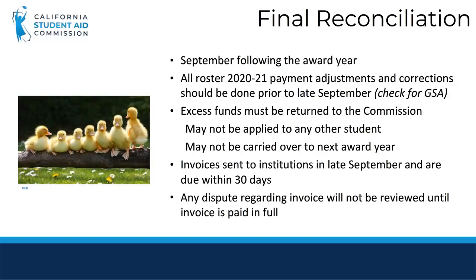Final reconciliation happens in September following the award year. All roster payment adjustments and corrections should be done prior to the announced deadline. Excess funds must be returned to the Commission and they cannot be applied to any other students and cannot be carried over to the next award year. Invoices are sent to the institutions in late September and are due within 30 days. Any dispute regarding the invoice will not be reviewed until the invoice is paid in full.